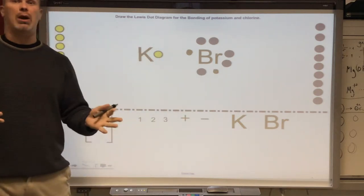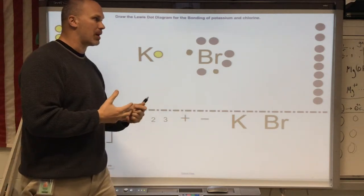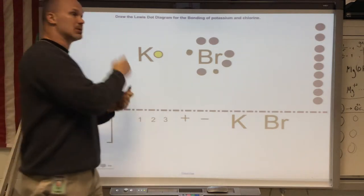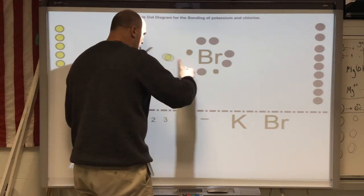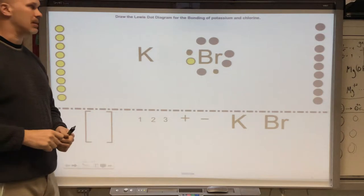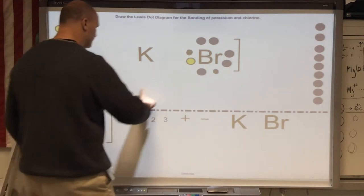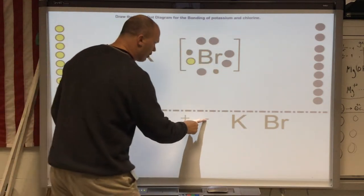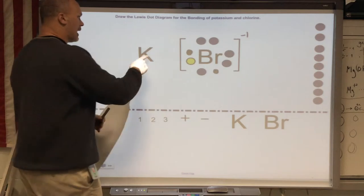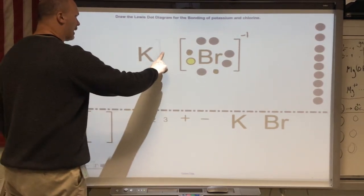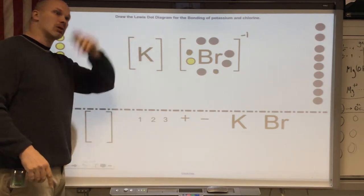So bromide takes the electron from the potassium. Immediately, we put brackets up here to show that this thing collectively is negative one. Potassium lost its valence electron, so we show brackets that are empty to show that there are no valence electrons left. It lost all its valence.